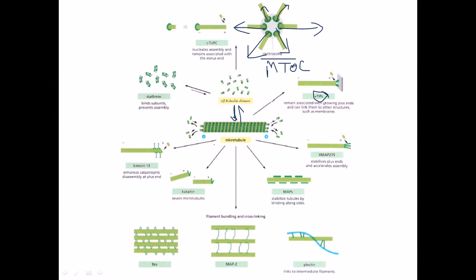MAP proteins bind to the alpha and beta subunits of the microtubule and stabilize its structure. Katanin is a protein that severs microtubules. XMAP215 is a protein that stabilizes the plus end of the microtubule and accelerates assembly. Gamma-TuRC and XMAP215 both help accelerate assembly, while MAPs stabilize the microtubule without promoting further plus-end growth.